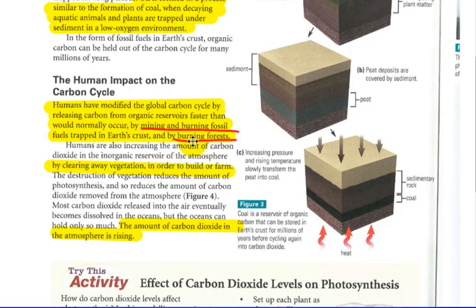Humans are also increasing the amount of carbon dioxide in the inorganic reservoir of the atmosphere by clearing away vegetation. If we clear away plant life, they're not able, those plants are not able to take in the carbon dioxide and convert into oxygen. So what we have here is we have carbon dioxide remaining in the atmosphere.